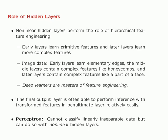The non-linear hidden layers perform the role of hierarchical feature engineering. Early layers learn primitive features and later layers learn more complex features. For image data, for example, the early layers learn elementary edges, the middle layers learn complex features like honeycombs, and the later layers contain complex features like parts of a face. Deep learners' success largely comes from their mastery of feature engineering — transforming data so that the final output layer can perform inference with the transformed features in the penultimate layer relatively easily.